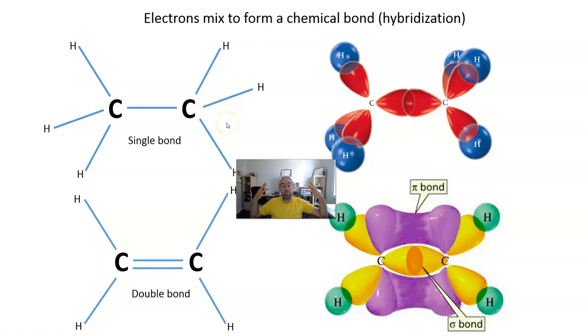Carbons can form multiple bonds. Single bond, this is called sigma bond, and double bond, why it looks like this.